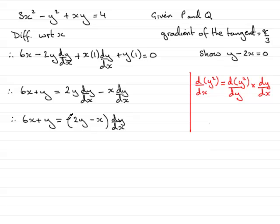It wouldn't be wrong if you did write it at the front, but it's a bit like writing 2y as y2. It just doesn't look right. We've got that. So we now need to rearrange this for dy by dx. So we have dy by dx equals 6x plus y all over 2y minus x. So we've established dy by dx.